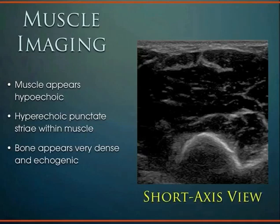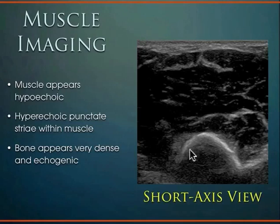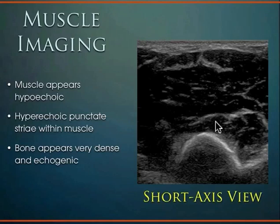That was the longitudinal view. In short axis — transverse or axial — view, you see more hypoechoic muscle structure with the deep bony structure below. The connective tissue dots in short axis view are referred to as the 'starry night' pattern — that interwoven connective tissue appearing as bright dots.